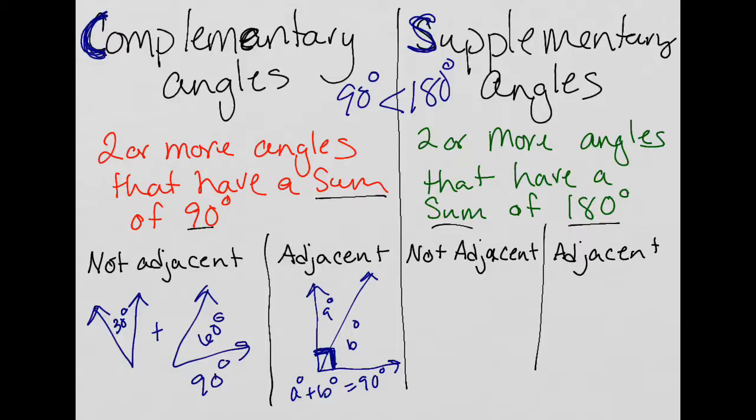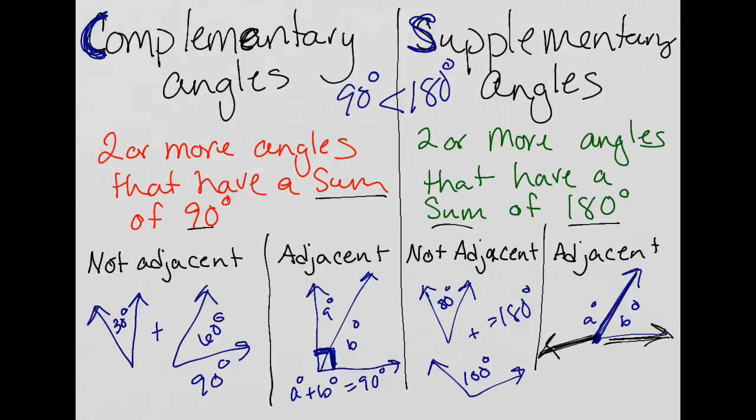Supplementary angles that are non-adjacent would just be two separate angles. Supplementary angles that their measurements, I know by adding, would be 180 degrees. Adjacent supplementary angles would be two angles. Here's angle A and angle B that are adjacent, meaning they share that ray and that vertex. But then their other rays, the left ray and the right ray, create a straight line, which we talked about, or straight angle, which has 180 degrees.